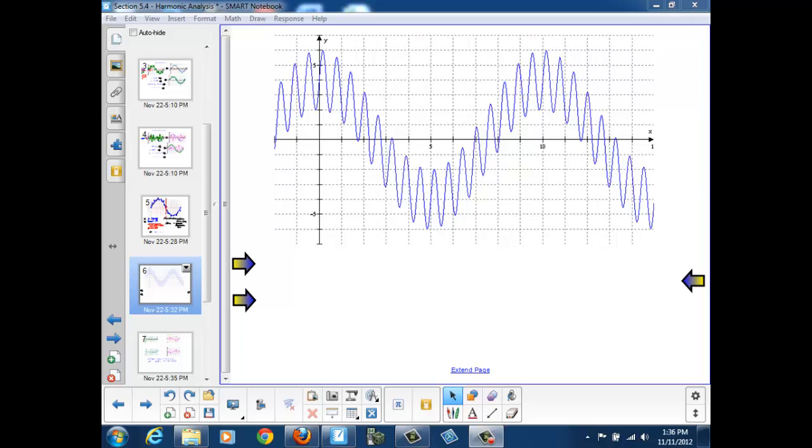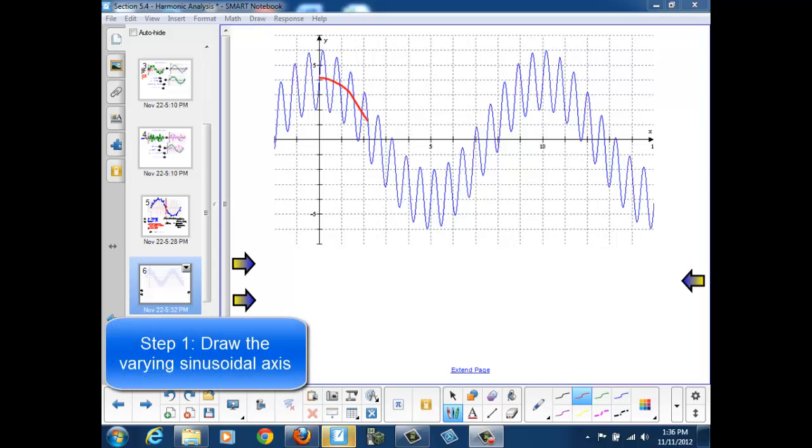Here we have a graph that if I drew a midline through the graph, I would see a graph with a varying sinusoidal axis.